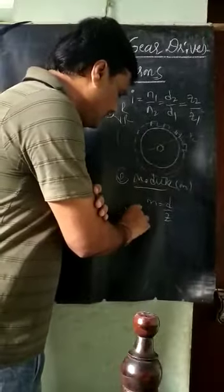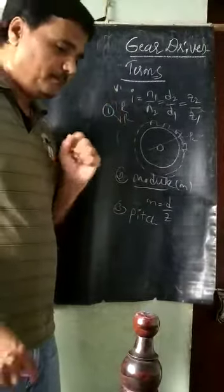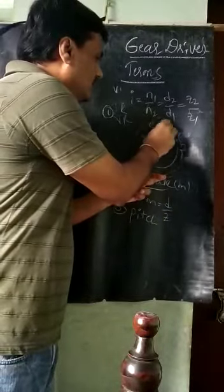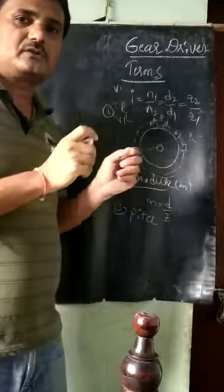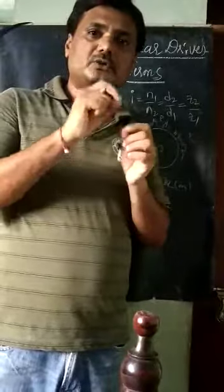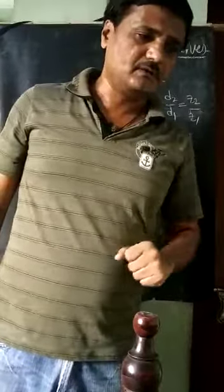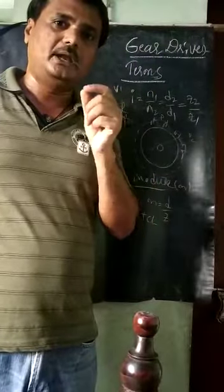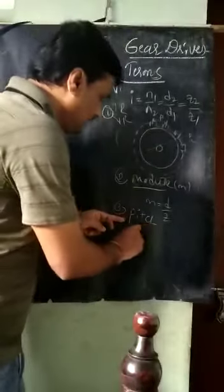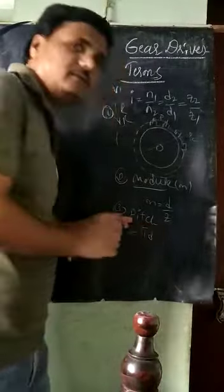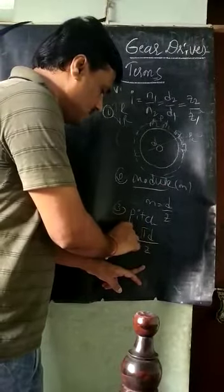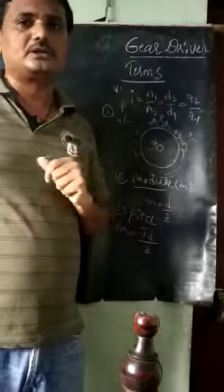The next term is pitch. Pitch means the consecutive distance between two teeth. Pitch is given by: P = πD/Z, where πD is the circumference of the pitch circle and Z is the number of teeth. So the total circumference divided by the number of teeth gives the pitch. This is one important term we use in the case of gears.